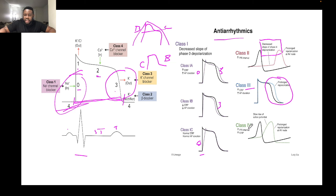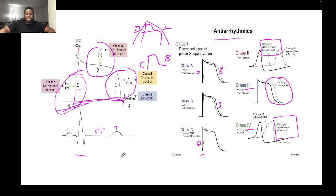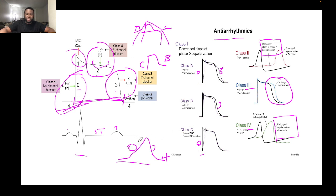Class 4 calcium channel blockers work on phase two of the cardiac action potential, prolonging repolarization of the AV node. Importantly, the SA node and AV node have different action potentials — they lack phase one and phase two, having only phase zero, phase three, and phase four. In these nodes, calcium channels operate during phase zero, which is an important distinction to remember.